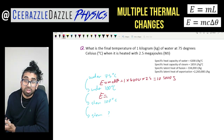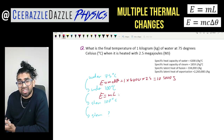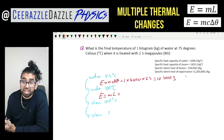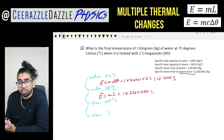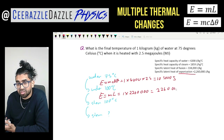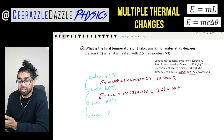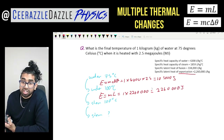For the next change of state, energy equals mass times specific latent heat of vaporization. That's 1 × 2,260,000 = 2,260,000 joules — and that's how much energy is used for this process.